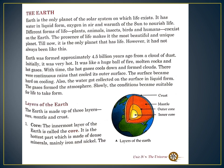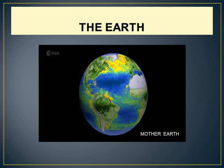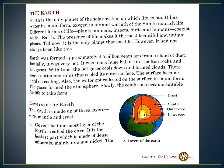However, it had not always been like this. Earth was formed approximately 4.5 billion years ago from a cloud of dust. Initially it was very hot — like a huge ball of fire, molten rocks, and hot gases. With time the hot gases cooled down and formed clouds. There were continuous rains that cooled its outer surface. The surface became hard on cooling, water collected on the surface in liquid form, gases formed the atmosphere, and slowly the conditions became suitable for life.